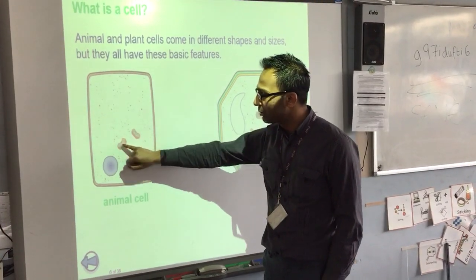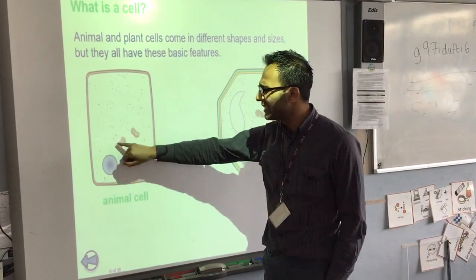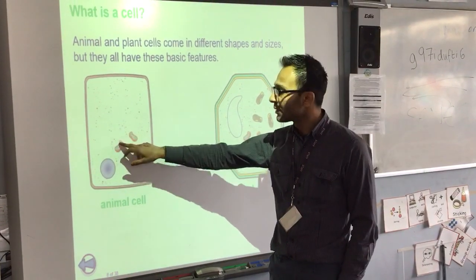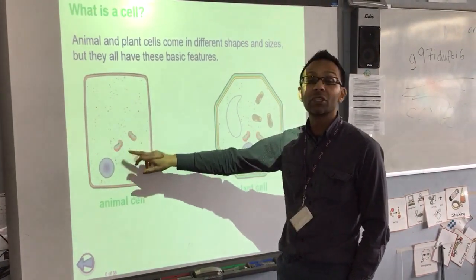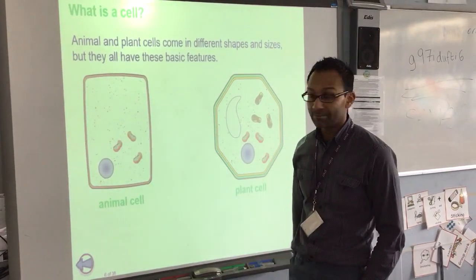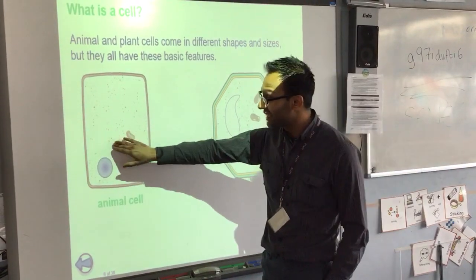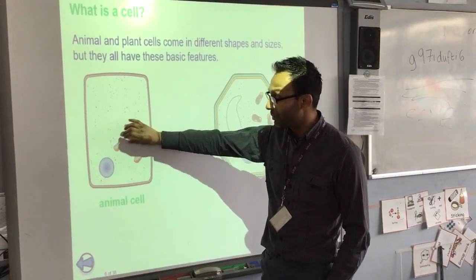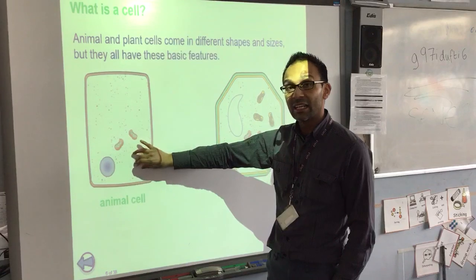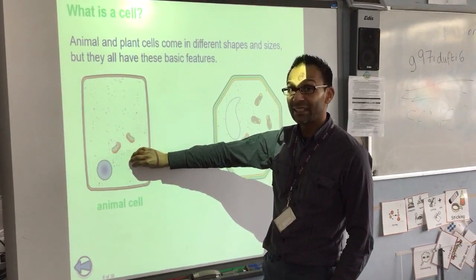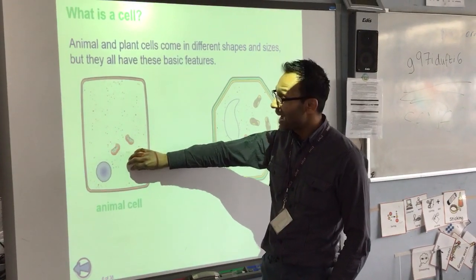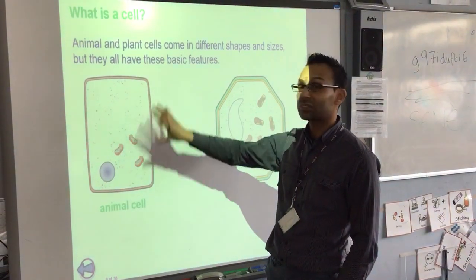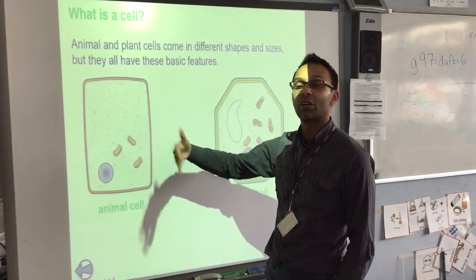Moving further in, we come to these little bean-like structures — they look a bit like kidney beans. These are what we call the mitochondria. The mitochondria is where energy is made. This is a bit like the factory where energy is made, and this energy is then able to supply energy to the whole cell to keep it going.